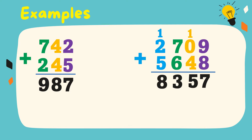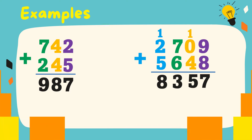1 plus 2 plus 5 is equal to 8. Therefore, the sum is equal to 8,357.